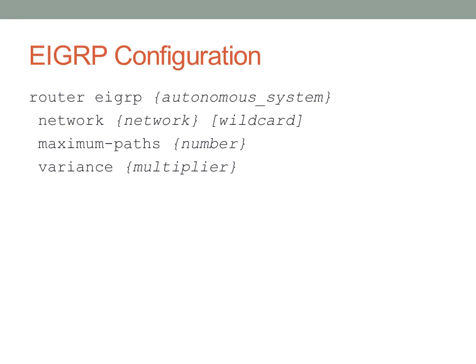To configure EIGRP, use the command 'router eigrp'. Unlike OSPF where the number is just a process ID, the number after 'router eigrp' is the autonomous system number, and it must match across all routers in the same EIGRP cluster. Your OSPF process IDs can differ between routers, but EIGRP requires the same autonomous system number. You can add networks similarly to OSPF using a network address and wildcard mask — not a subnet mask. You can also specify the maximum number of paths for load balancing and the variance for unequal cost load balancing.